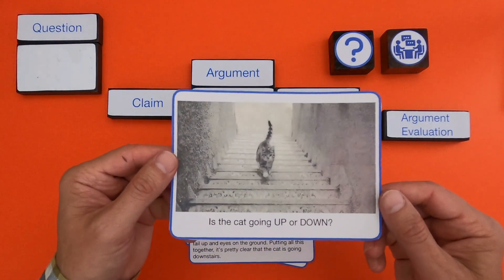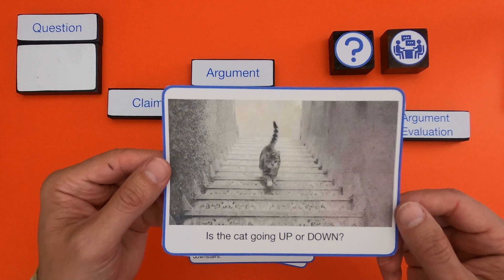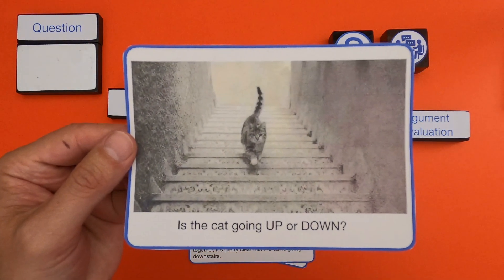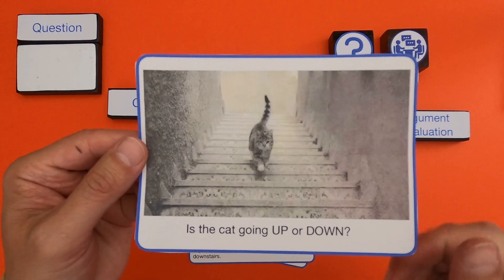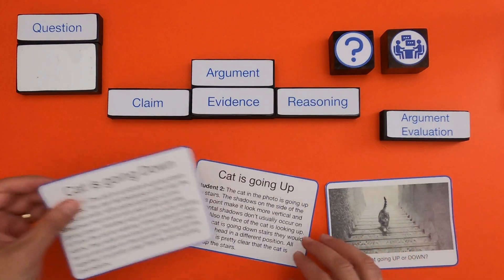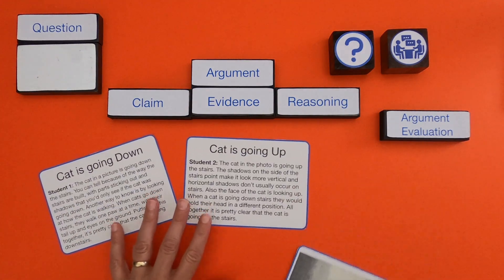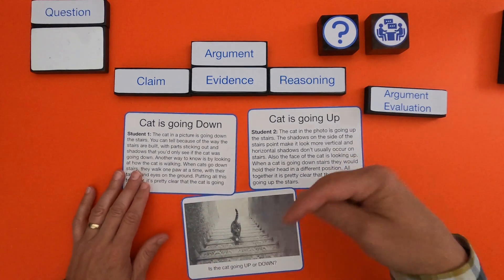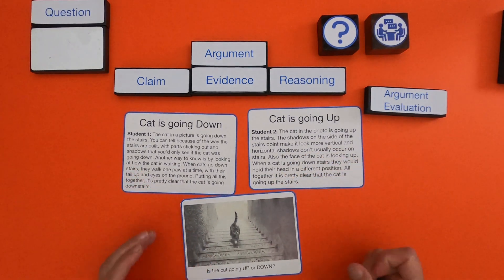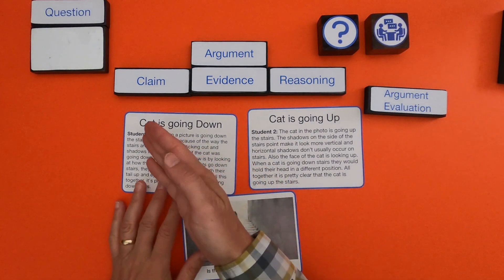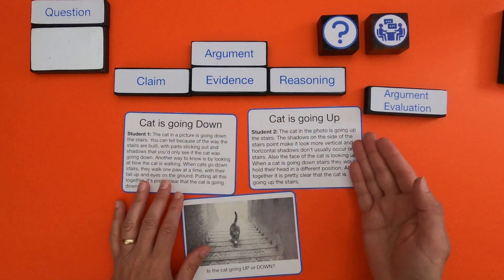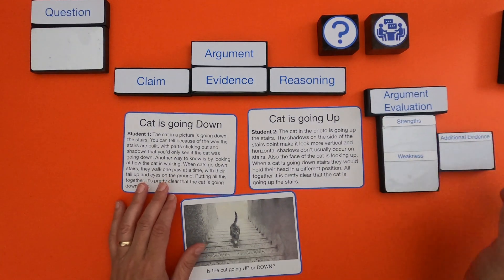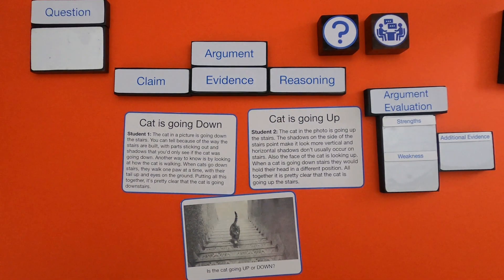For the next example, there's an image that went around the internet: a photo of a cat on stairs. The big question is, is the cat going up the stairs or going down the stairs? There are two student arguments — student one and student two — each taking opposite positions. I'd encourage you to pause the video and try to write out claim, evidence, and reasoning for each student, then evaluate strengths, weaknesses, and additional evidence before coming back to compare analysis.